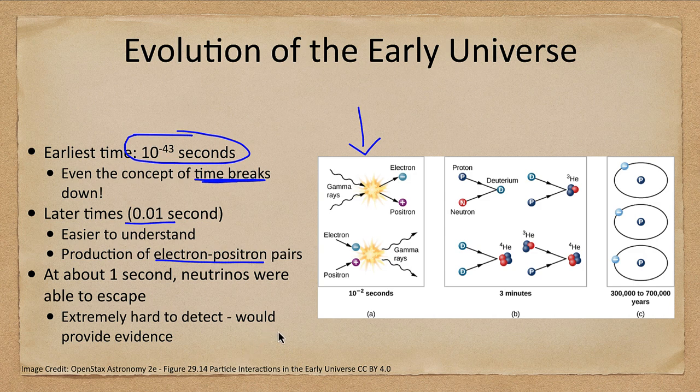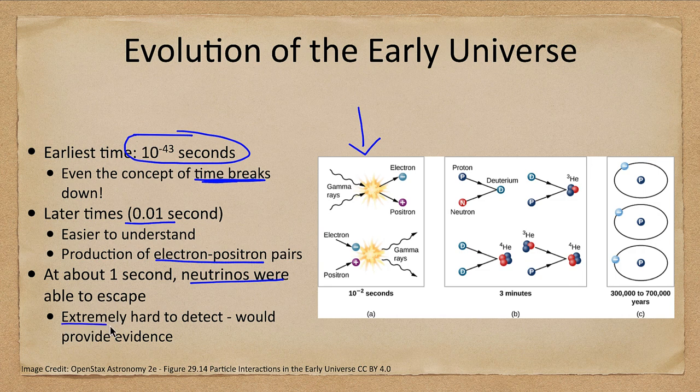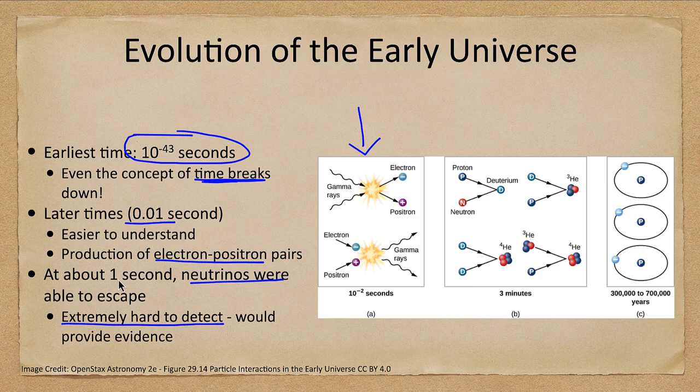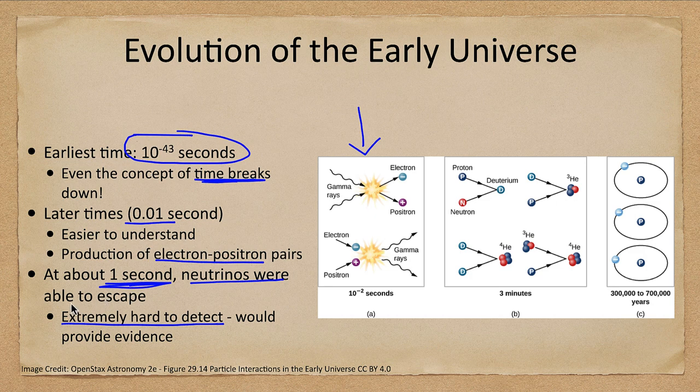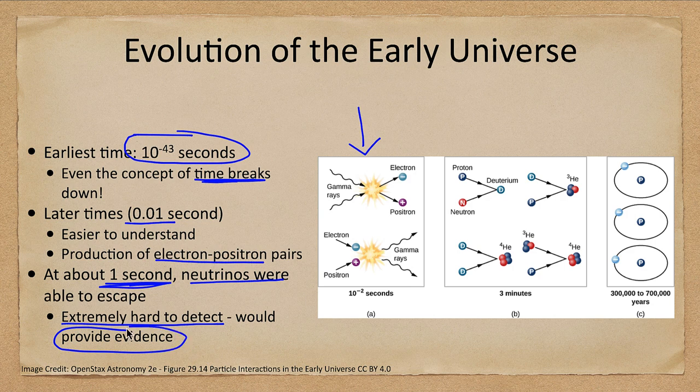At about one second, the neutrinos were able to escape. This would be something that would be nice to be able to detect. Remember, neutrinos are really hard to detect, but at less than one second, the universe was so dense that even neutrinos couldn't get through it. The neutrinos would be able to escape—if we could, this would be some good evidence for the Big Bang. Unfortunately, that is a very, very hard thing to detect.